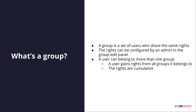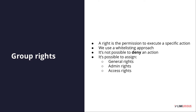A group is a set of users who share the same rights. These rights can be configured by an admin in the group edit panel. Users can belong to more than one single group — in that case, the user gets rights from all groups they belong to, and the rights are cumulative. A right is the permission to execute a specific action. Linkurious Enterprise uses a whitelisting approach: at the beginning, you have no rights, and with groups you can grant some. It's not possible to deny an action — you can only grant.